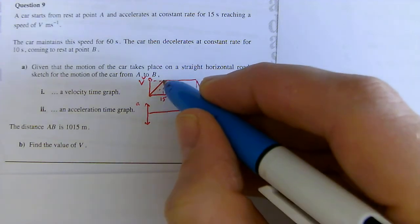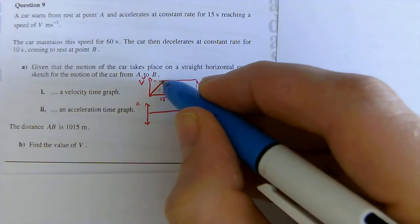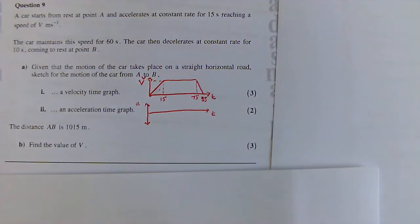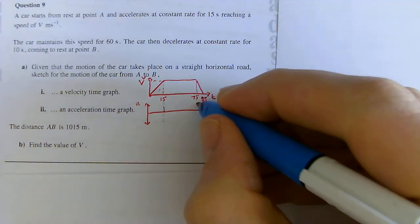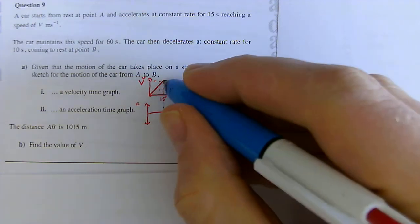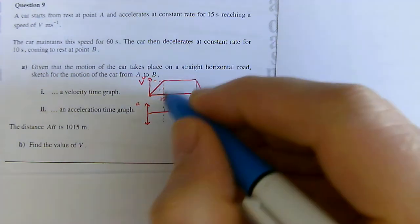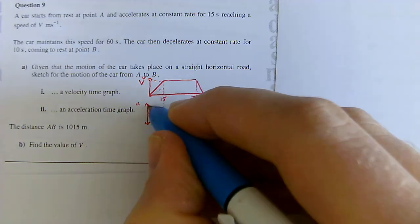Now, in the first instance, the gradient all the way along here is positive and it's the same. So, I'm going to just mark this out in a different colour. Now, up here, this positive gradient, we don't know what it is yet. We could work it out. We don't actually have to.